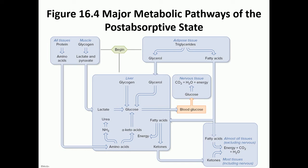Triglycerides break down into glycerol and fatty acids. Glycerol is transported to the liver and can be used to make glucose — the process of making glucose out of other things is known as gluconeogenesis. The post-absorptive state involves the increase of glycogenolysis and gluconeogenesis. Due to low glucose levels, the pancreas alpha cells make glucagon and beta cells are inhibited from making insulin. This post-absorptive state is under the effect of glucagon, which stimulates glycogenolysis, gluconeogenesis, protein catabolism, and lipolysis.